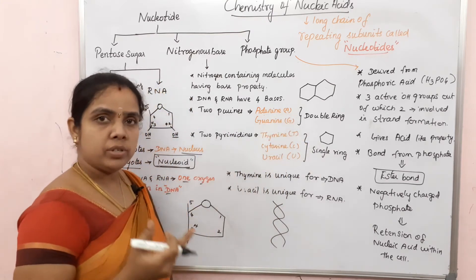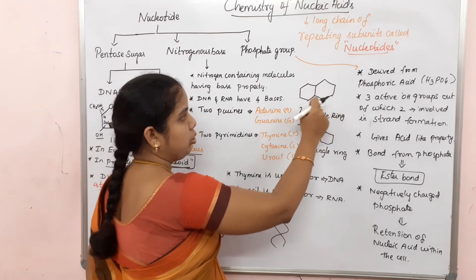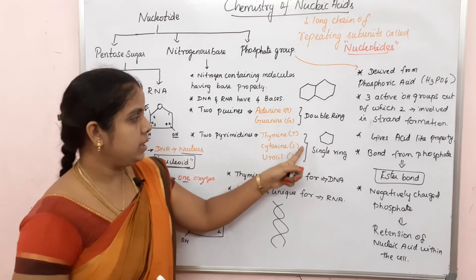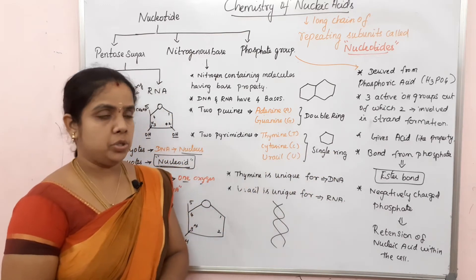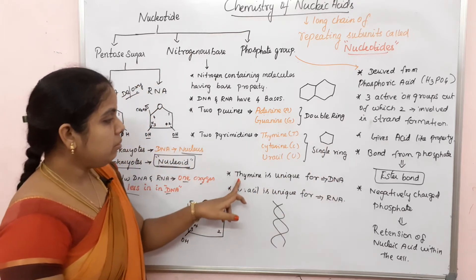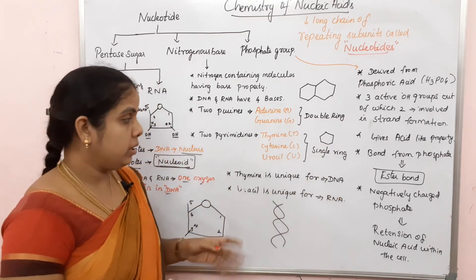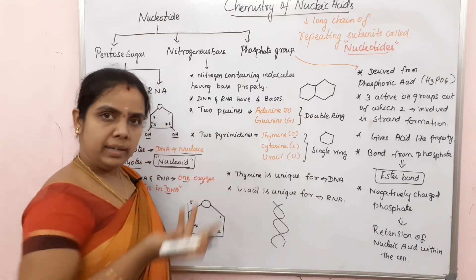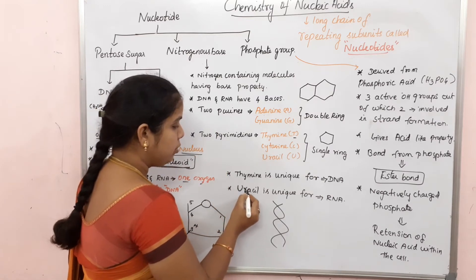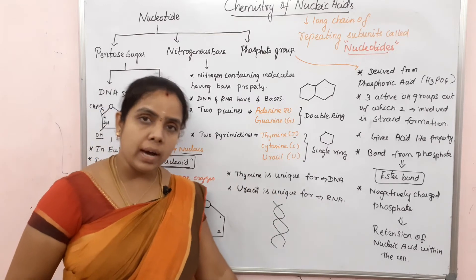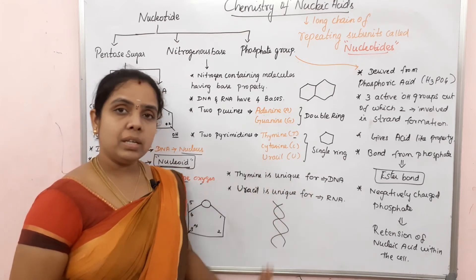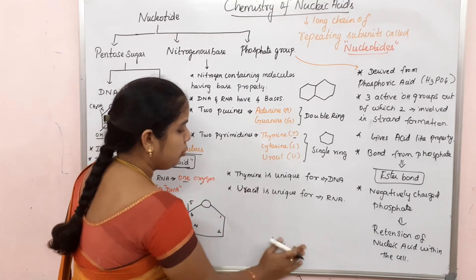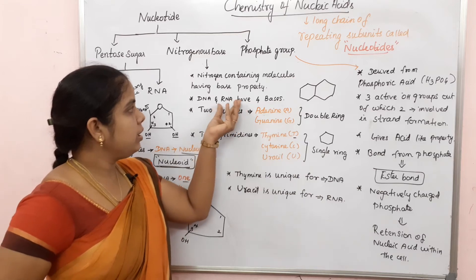Purines (A and G) have a double ring structure. Pyrimidines (T, C, U) have a single ring structure. Thymine is unique to DNA - it is present only in deoxyribonucleic acid. Uracil is unique to RNA - in RNA, thymine is replaced by uracil.